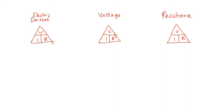Before we proceed to solving, let us first derive the possible formulas we will be needing during computation. First, let's derive the equation for electric current. Electric current is represented by capital letter I, so in this triangle we are going to erase I, and you will have V over R. Therefore, the formula for electric current is I is equal to V over R, or voltage over resistance.